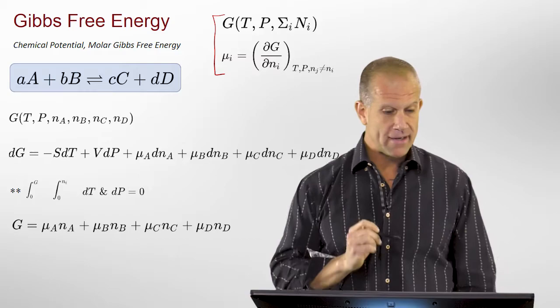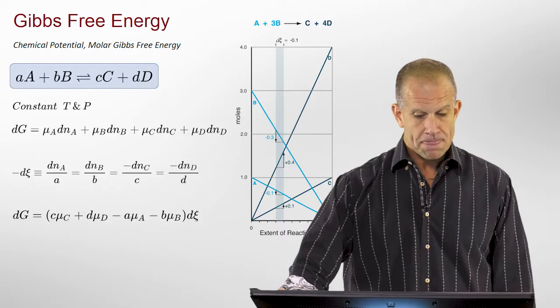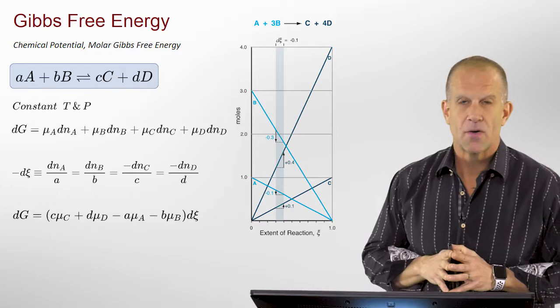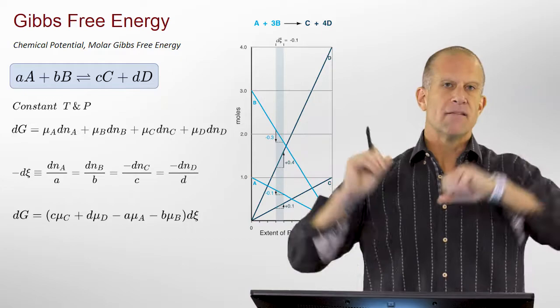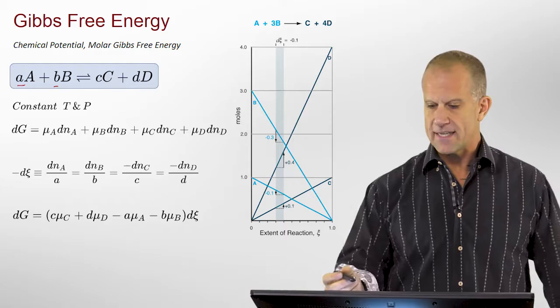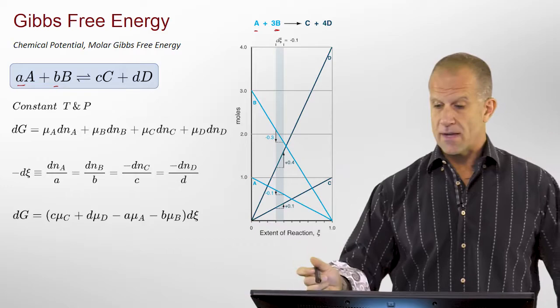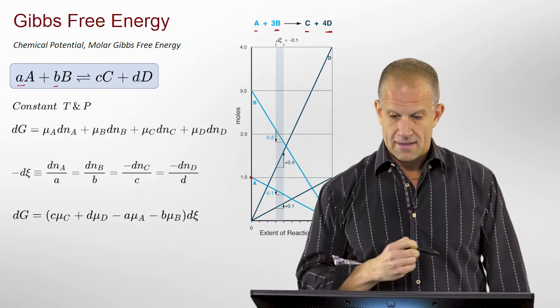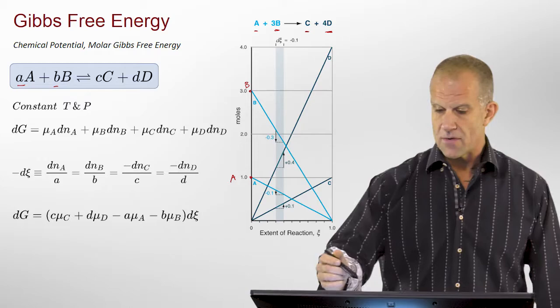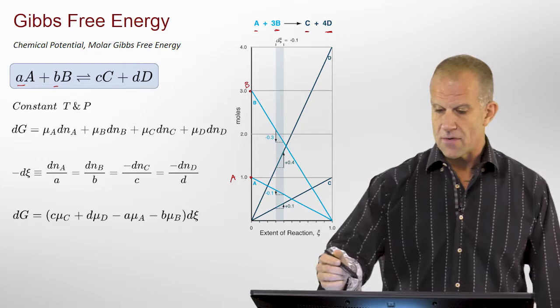Now let's look at this in terms of something familiar. We're doing a reaction where A and B, with their molar coefficients, form C and D. For example, one mole of A reacts with three moles of B to form one mole of C and four moles of D. So we start with one mole of A and three moles of B, they react, and what ends up are four moles of D and one mole of C.